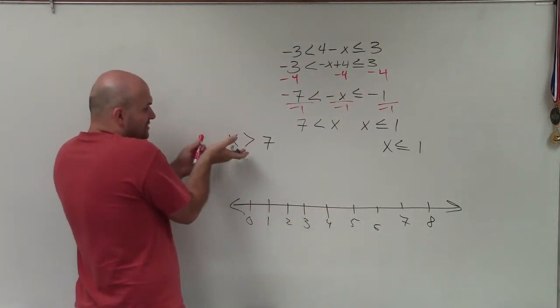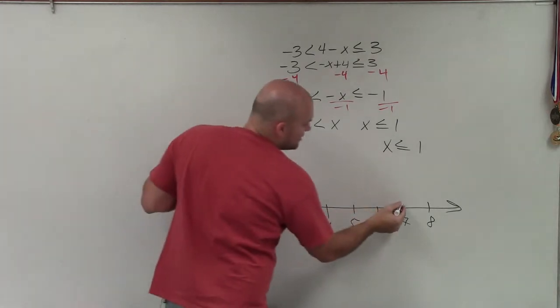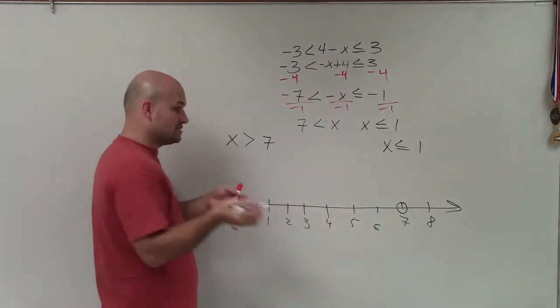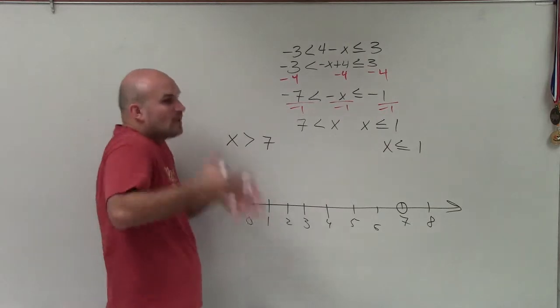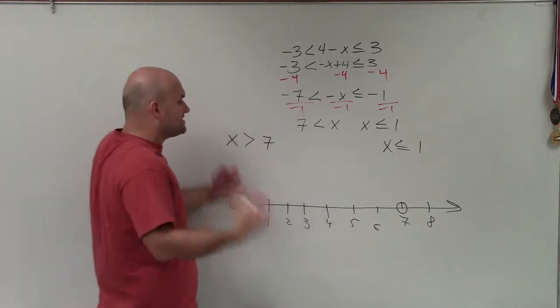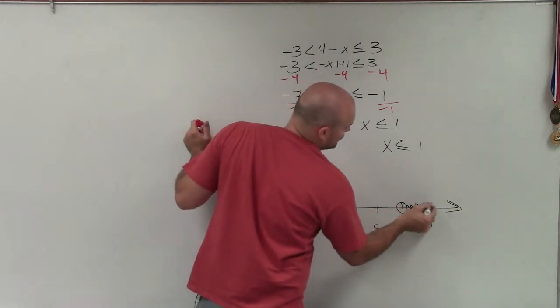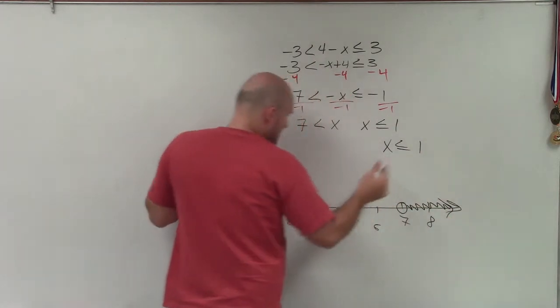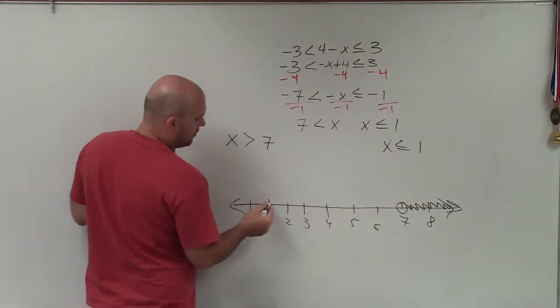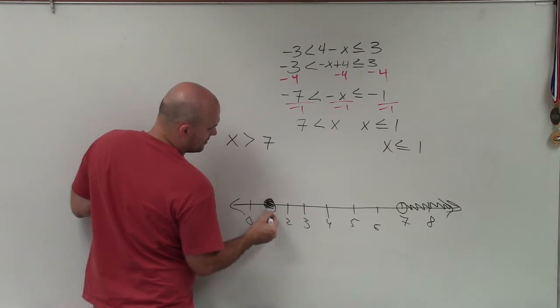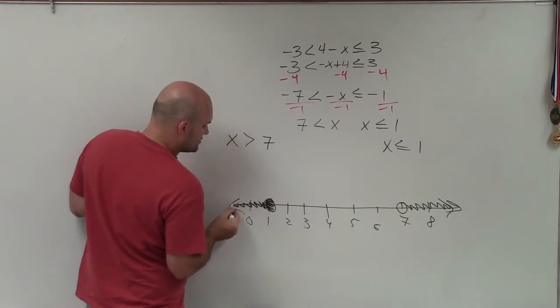So to graph this, what I see is I have 7. And you can see it's x > 7. So since it's not greater than or equal to, that's an open circle. And all values greater than. Just say it out loud. x > 7. So that's now going to be all numbers to the right, because all the numbers to the right are greater than 7. And then x ≤ 1. Those are going to be all the values to the left.